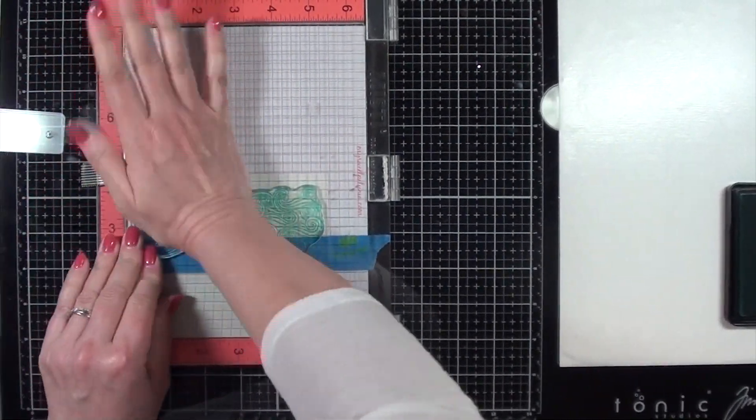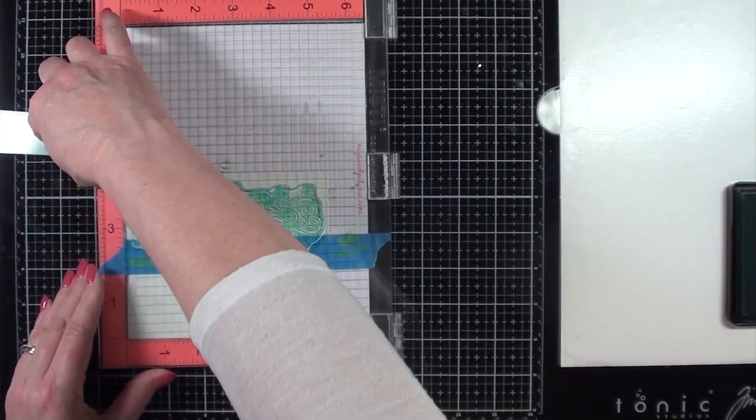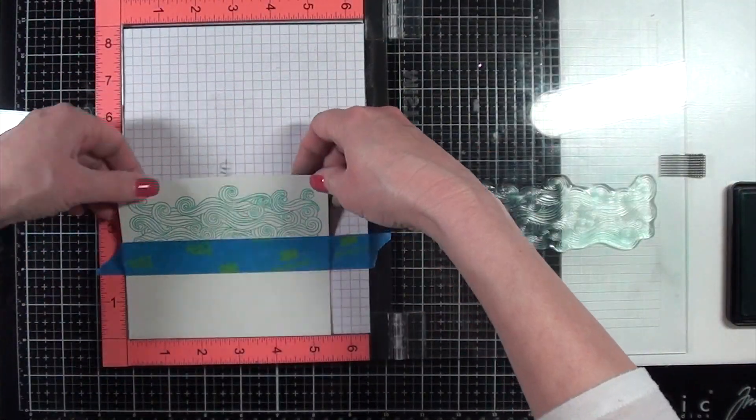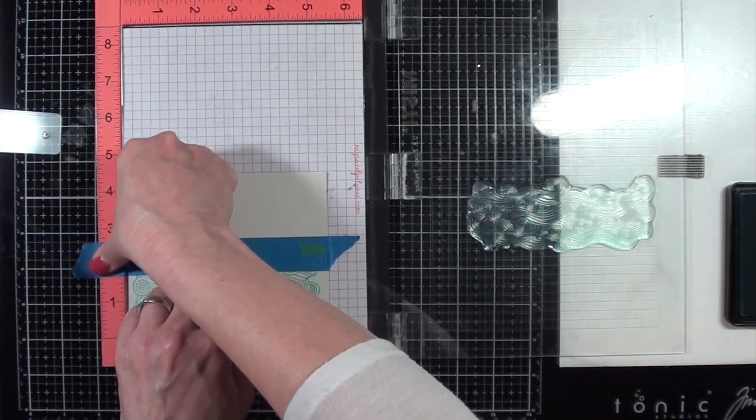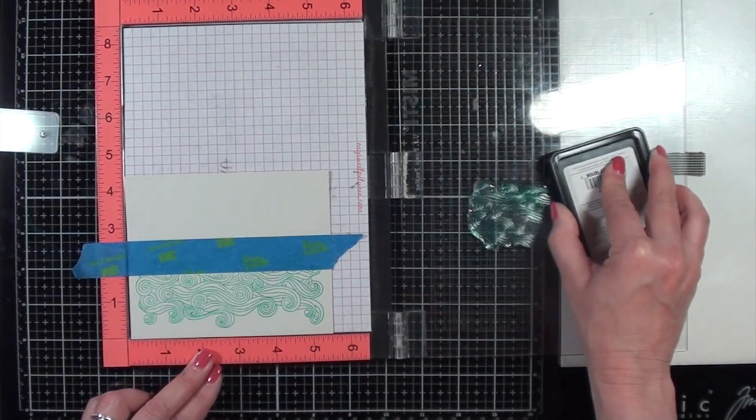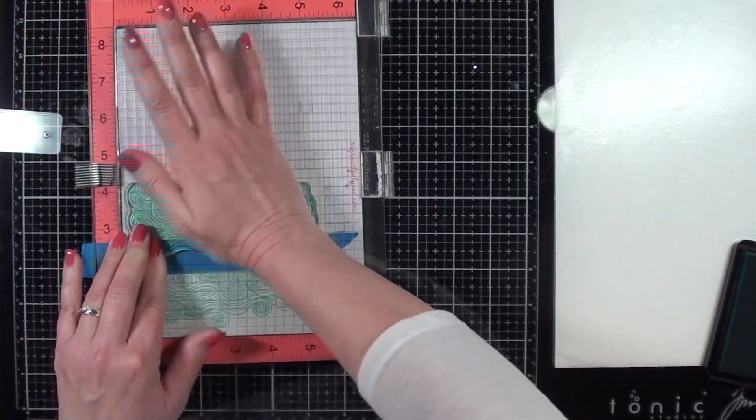And the reason that I made that choice is I thought this looked better than stamping this color, the waves color, on white. Again, that's just a personal preference. I placed the stamp so that I would be able to flip it over and stamp on the other side without having to reposition the stamp.